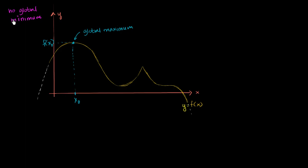Now, do we have local minima or local maxima? A local minimum you could imagine means that the value of the function at that point is lower than the points around it. So right over here, it looks like we have a local minimum. We can say that we have a local minimum point at x₁ if we have a region around x₁ where f(x₁) is less than f(x) for any x in this region right over here. This is a low point for any of the values of f around it.